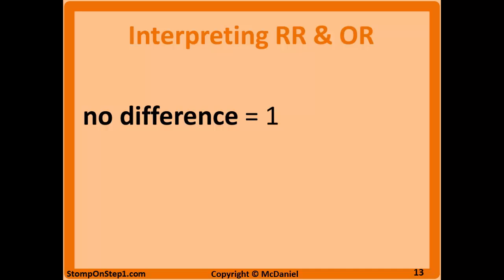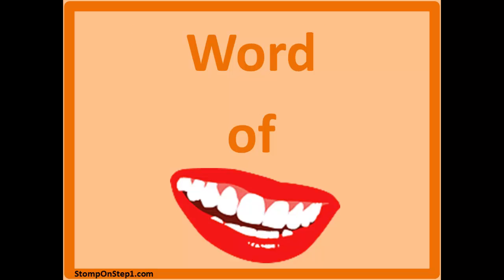Similarly, an RR or an OR of 2 means whatever you're measuring is two times as likely to occur in the group being studied when compared with the control group. And an RR or an OR of 0.5 means that it's half as likely in whatever group you're studying. That brings us to the end of this video.